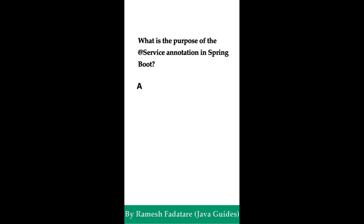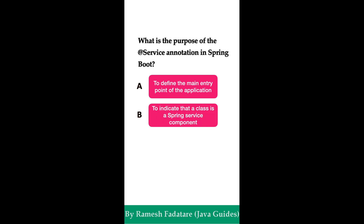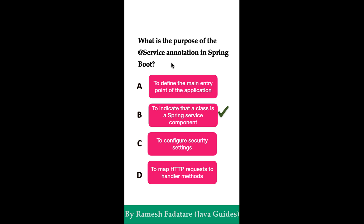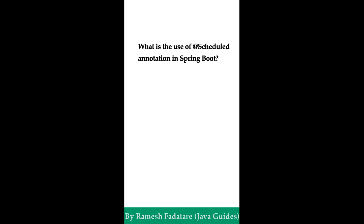What is the purpose of the @Service annotation in Spring Boot? Option A: to define the main entry point of the application. Option B: to indicate that a class is a Spring service component. Option C: to configure security settings. Option D: to map HTTP requests to handler methods. The correct answer is option B. The @Service annotation indicates that a class performs service-related business logic, marking it as a service layer component which Spring automatically detects and registers as a Spring bean, making it available for dependency injection.